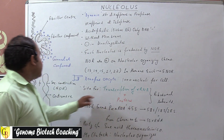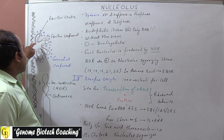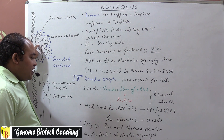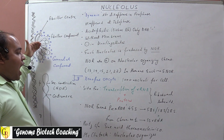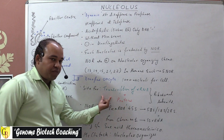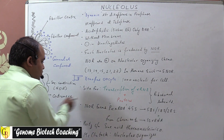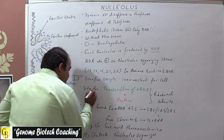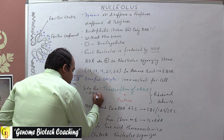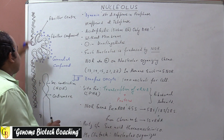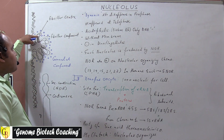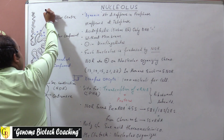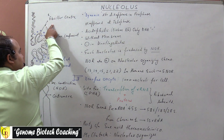The nucleolus is importantly known for the biosynthesis of ribosomal subunits because it contains rRNA. It is the rDNA which leads to the biosynthesis of rRNA through the process of transcription. This rDNA is associated with the innermost compartment of the nucleolus, which is called the fibrillar center.